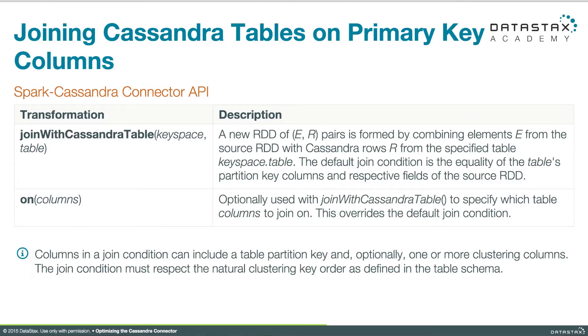The Spark Cassandra connector gives us a method called joinWithCassandraTable. If you're joining on columns to the second table which are in the primary key of that second table, you want to use this method. If you need to override the default join condition, you can use the on method. Now, on still has to pick columns that are in the primary key — it still has to be something that can be converted into CQL, so that has to be a valid CQL query.